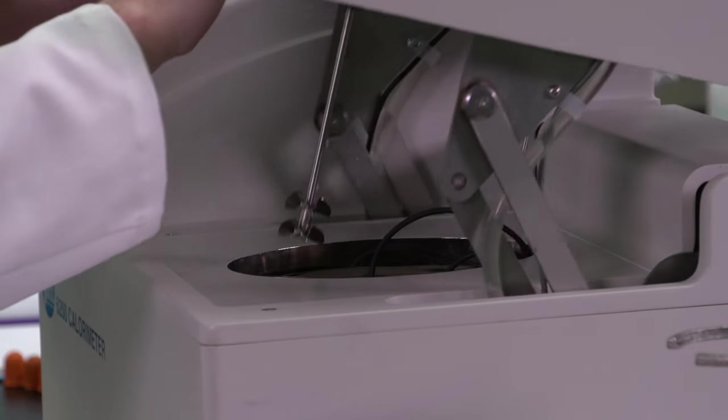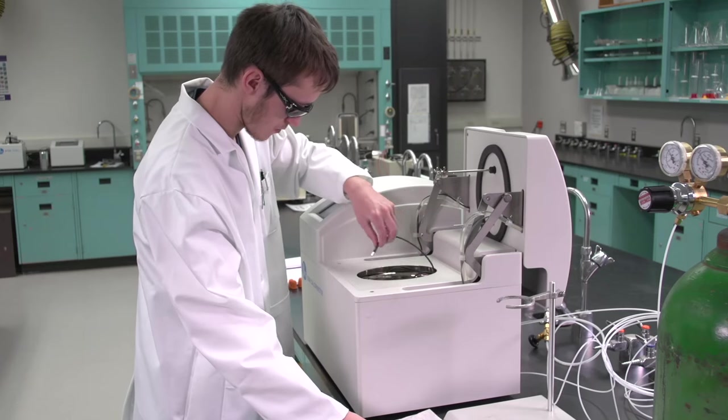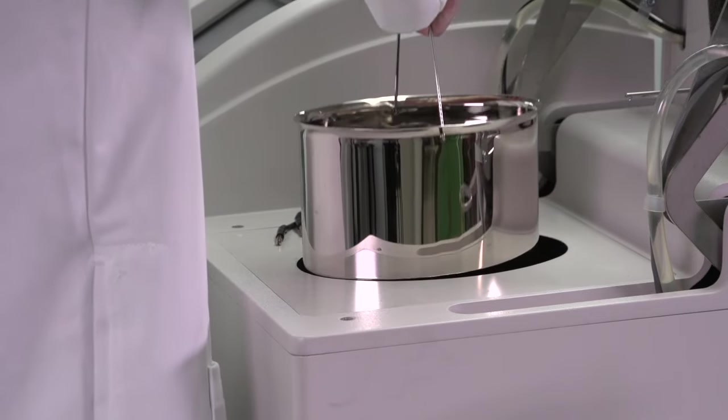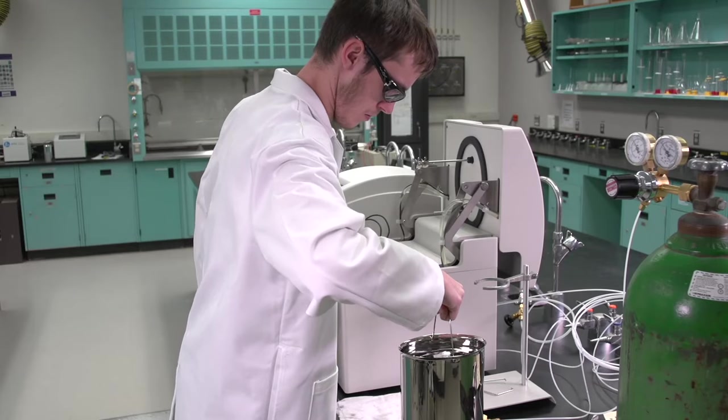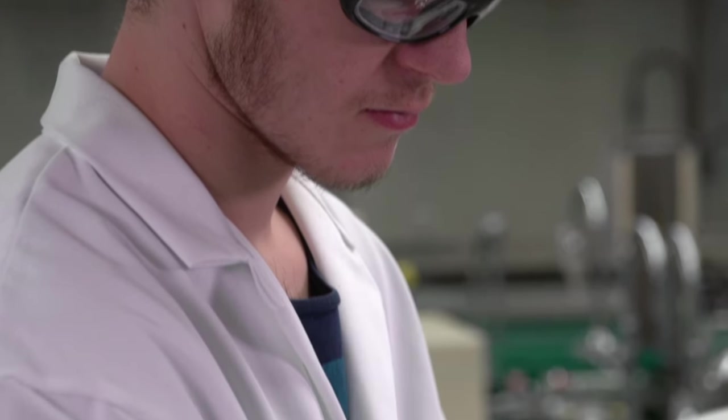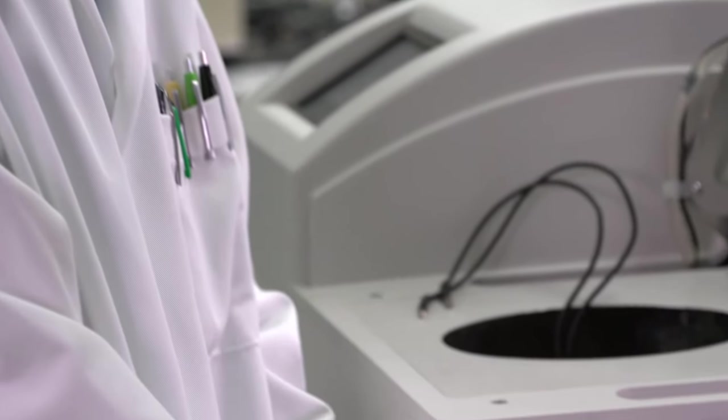Open the calorimeter cover. Disconnect the ignition wire leads and remove the bucket with the bomb from the calorimeter. Remove the bomb from the bucket and place it on the lab bench. Slowly open the gas outlet valve to release the gas pressure in the bomb.